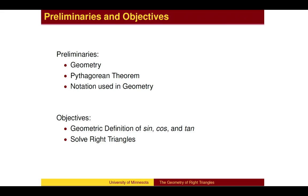In this lesson, we will give the geometric definition of three functions — sine, cosine, and tangent — and use them to find the three missing parts of a right triangle when three parts are known.